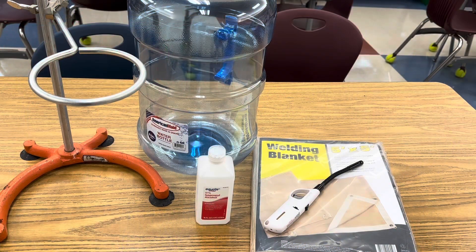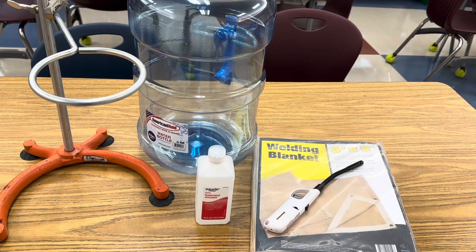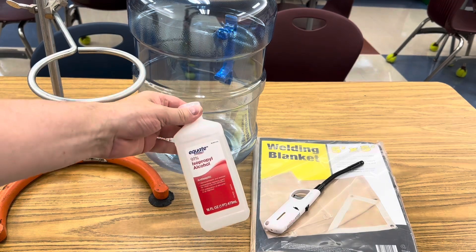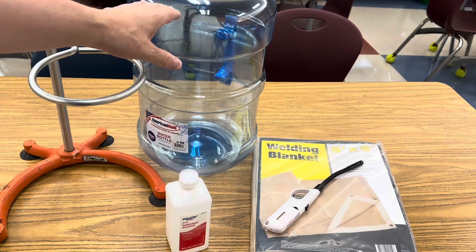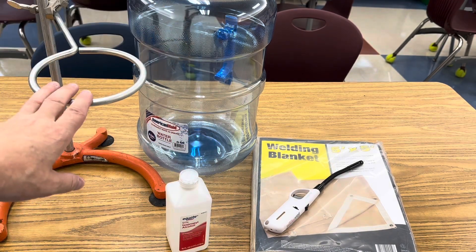For this demonstration, I'm using a welding blanket, a flexible lighter, 91% isopropyl alcohol, a five-gallon water jug, and a ring stand.